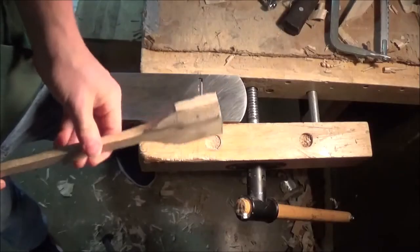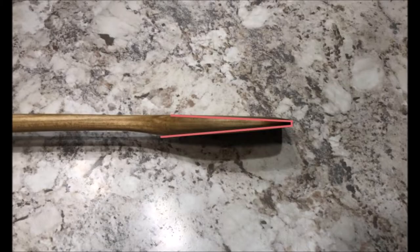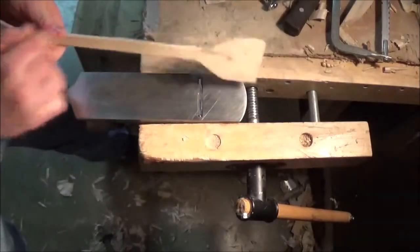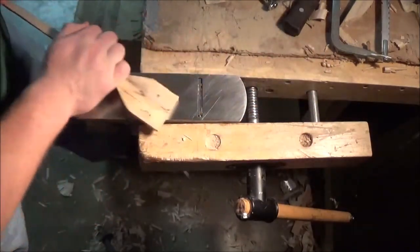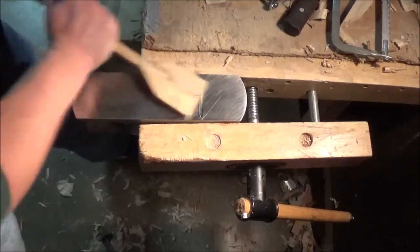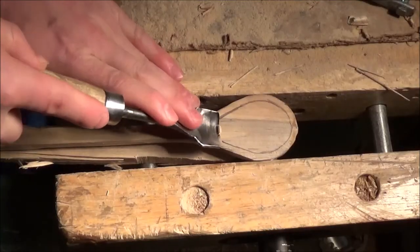Right now, the spatula is pretty bulky, and I want to make it look like this. So, the easiest way to do that, I've found, has been to just clamp a plane upside down and run the spatula across it like that. You just have to be careful that you don't plane off your fingertips or your palm.